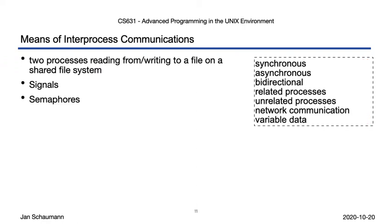There are a lot of other ways to perform IPC, and in the upcoming videos we'll be covering all of the following. We'll look at semaphores, which allow for asynchronous, unidirectional communications between related and unrelated processes on the same system, but the information we can relay is again very limited. In fact, semaphores are primarily used as a locking mechanism, but more on that in our next video.